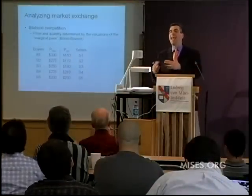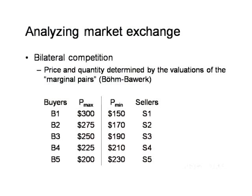Now suppose we have multiple buyers and multiple sellers — bilateral competition. This is where we get into Böhm-Bawerk's somewhat misunderstood analysis of what he called the marginal pairs. If you read Human Action, Mises does not go into detail about the mechanics of price setting — he simply mentions almost in passing that prices in markets are determined by the marginal pairs, as Böhm-Bawerk has explained, and then proceeds with his analysis. To contemporary readers, this is opaque. Let's spend time going through exactly what Böhm-Bawerk had in mind.